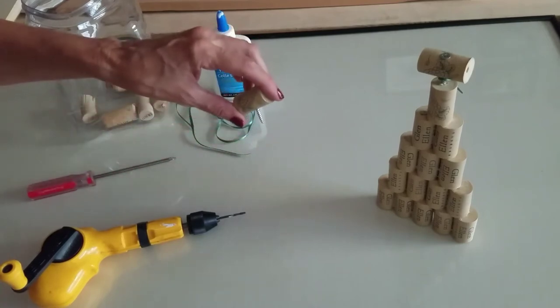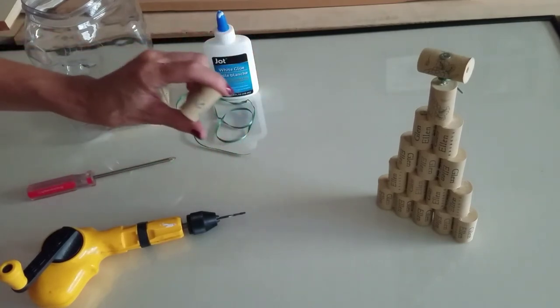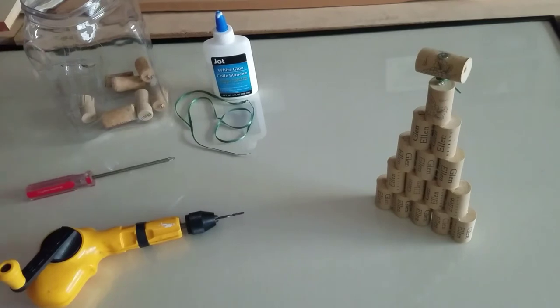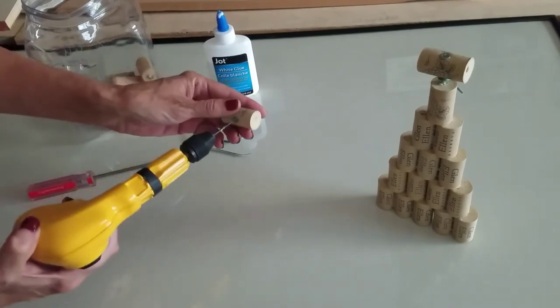And then I wanted to make my corkscrew. So what I did was I took a separate cork, I took my hand drill, and I made a starter hole.